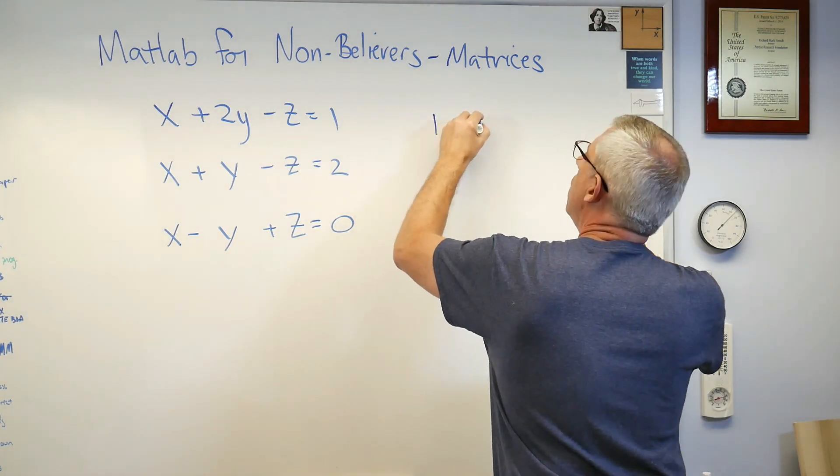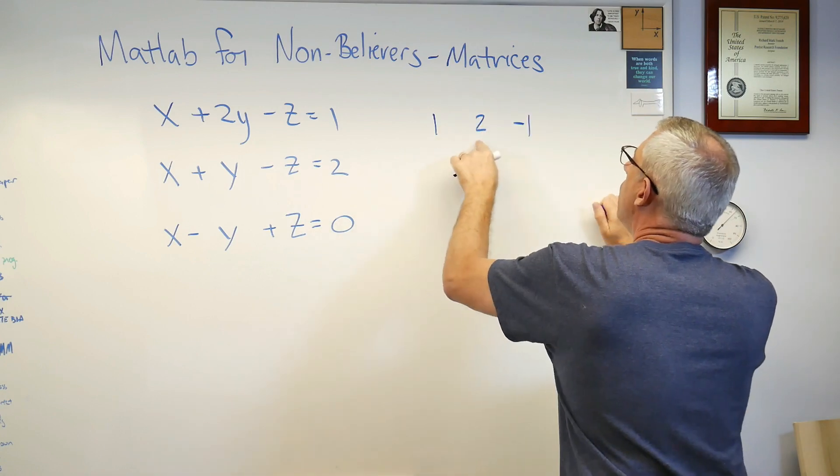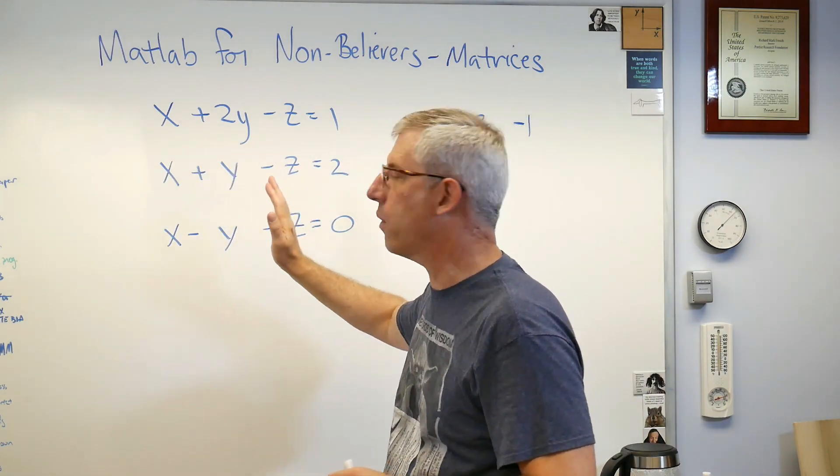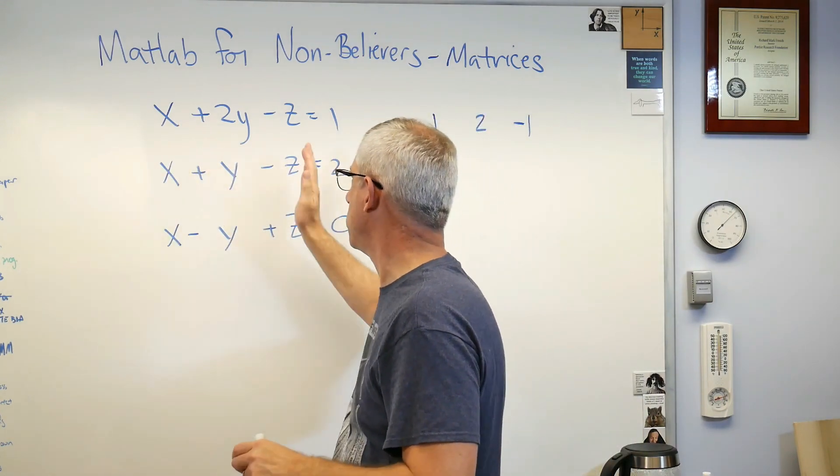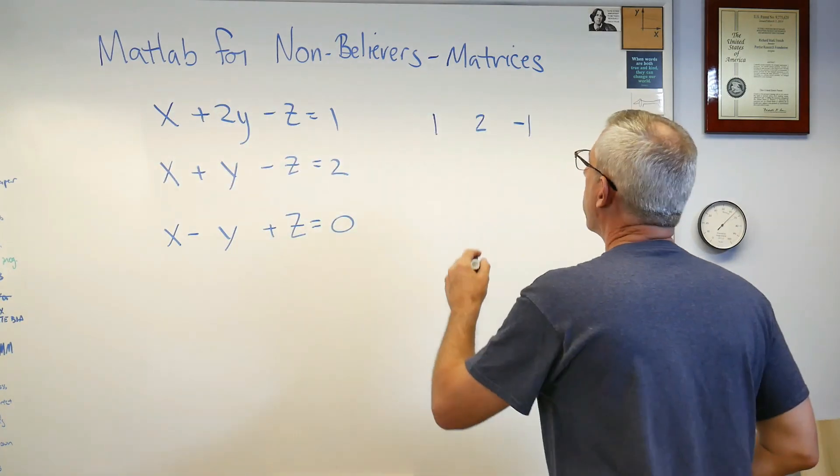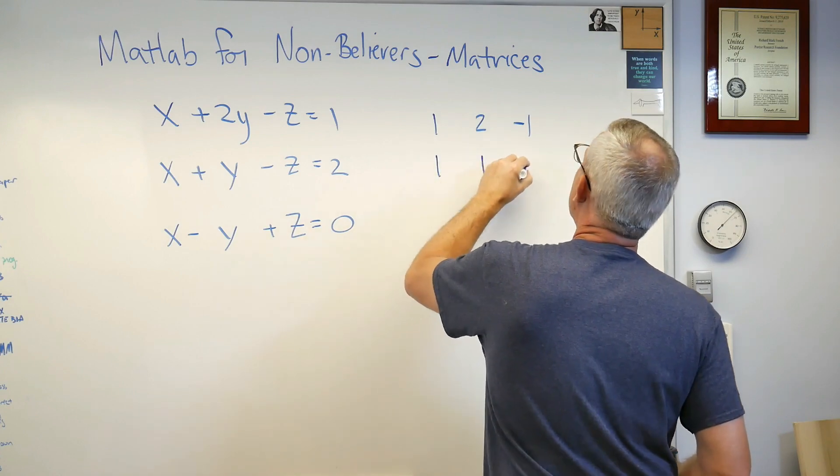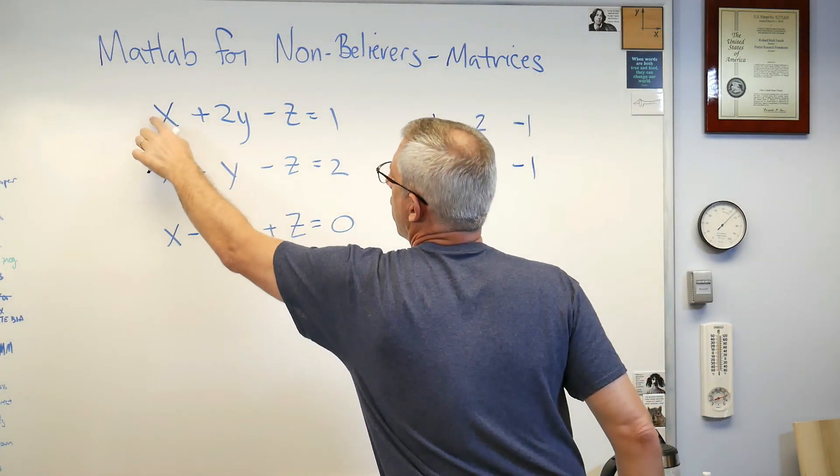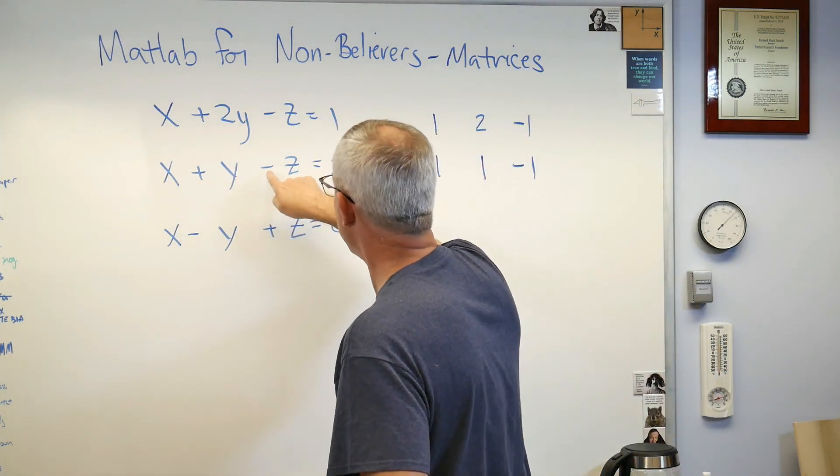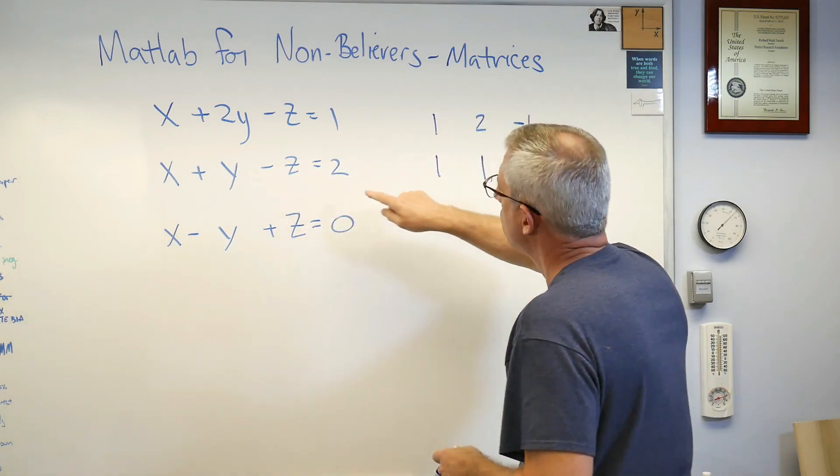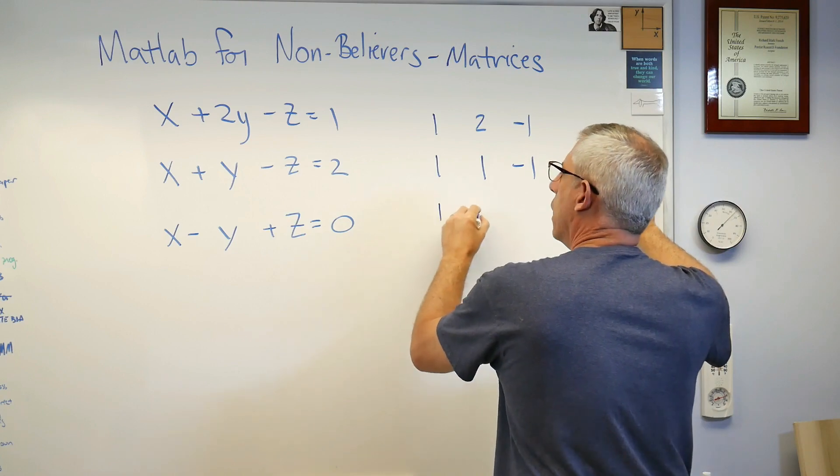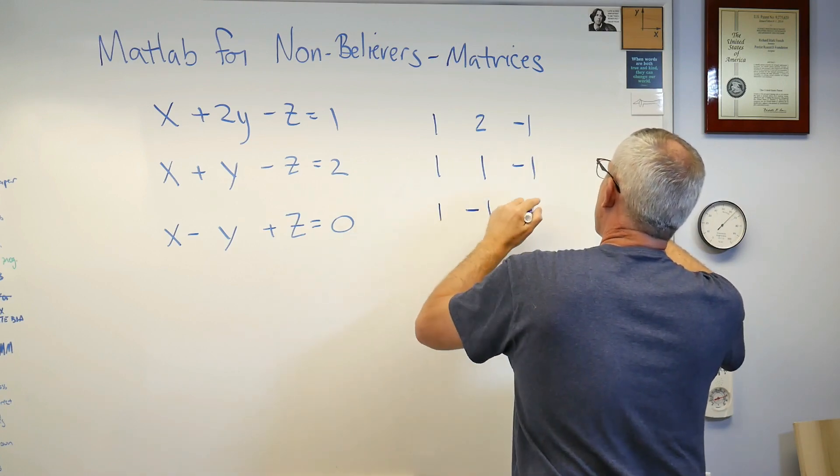This is how you write the equations down in algebraic form. In matrix form we would write it down this way: 1 2 -1, those are the coefficients in front of those variables. You notice the variables always appear in the same order. That's really important. They have to be X Y Z in whatever order I use in the first one, I have to use in all of them or I'm going to get the wrong answer. So 1 1 -1. We don't put the 1 there because it's not needed, but it's really there. That's actually 1 times X, 1 times Y, -1 times Z. So 1 -1 and 1.